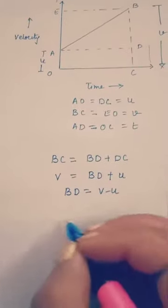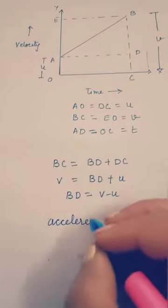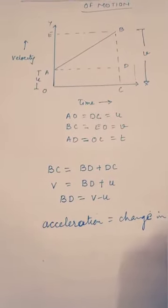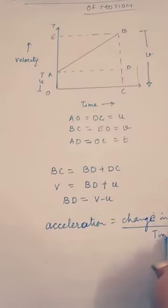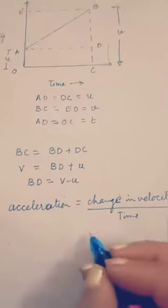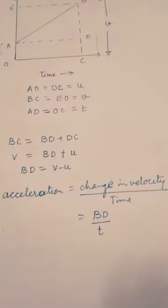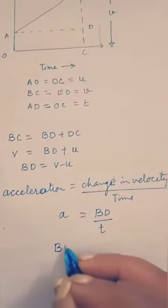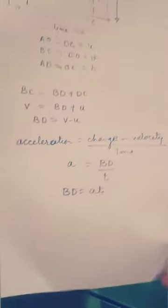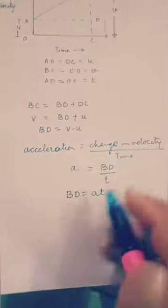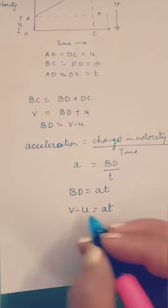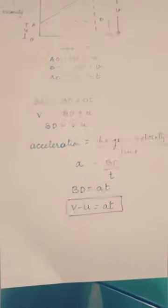Now let us take the formula for acceleration. Acceleration equals change in velocity divided by time. Change in velocity is V minus U, which equals BD. So we write change in velocity as BD divided by time T, giving acceleration A. Therefore BD equals AT. Since BD equals V minus U, we get V minus U equals AT. This is our first equation of motion, known as the velocity-time relation.